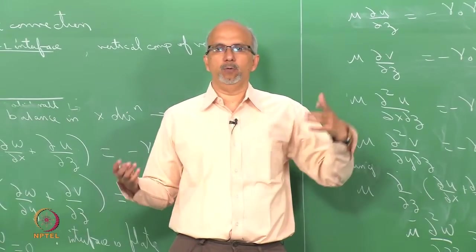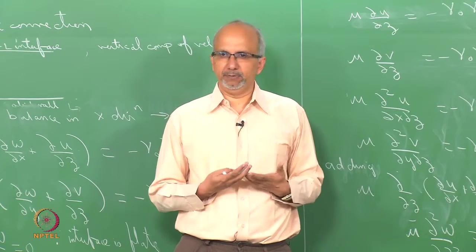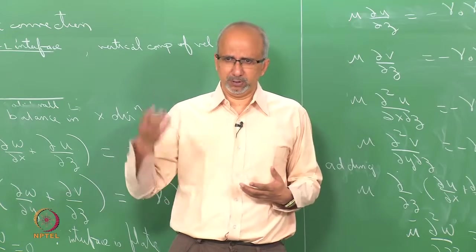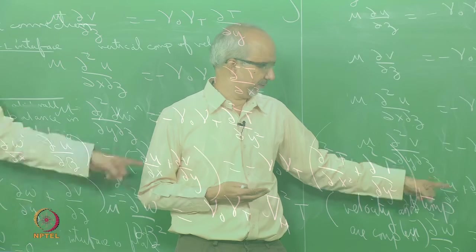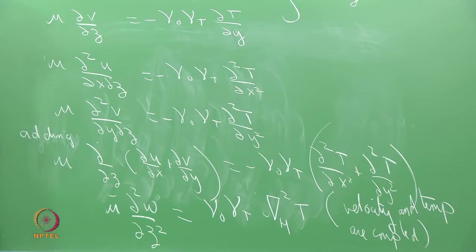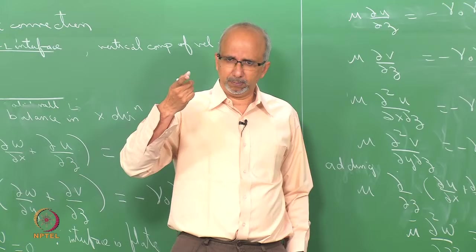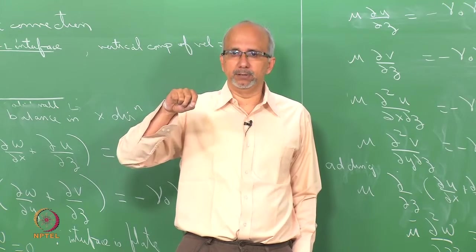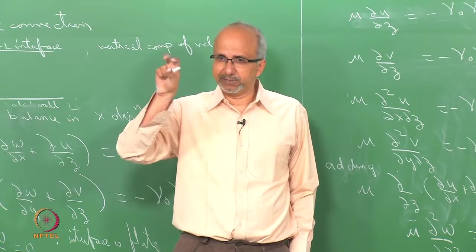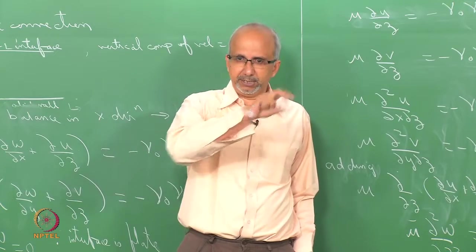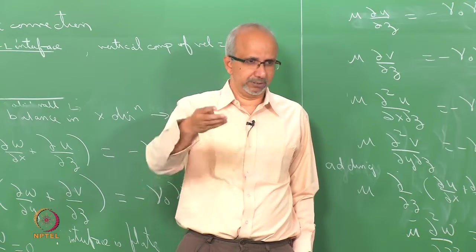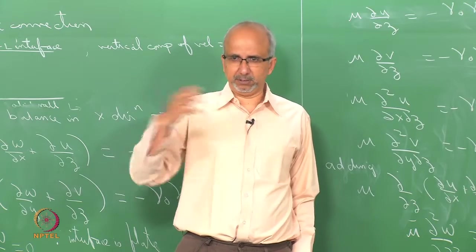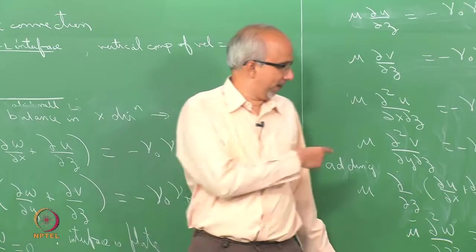At the end of the day there has to be some interaction between velocity and temperature — they cannot be decoupled. In the Rayleigh-Bénard problem, the coupling was through the differential equation because the gravity term contained temperature. You will see that it is the differential equation which had the coupling between velocity and temperature. Here, in the Marangoni problem, the coupling is through this boundary condition.